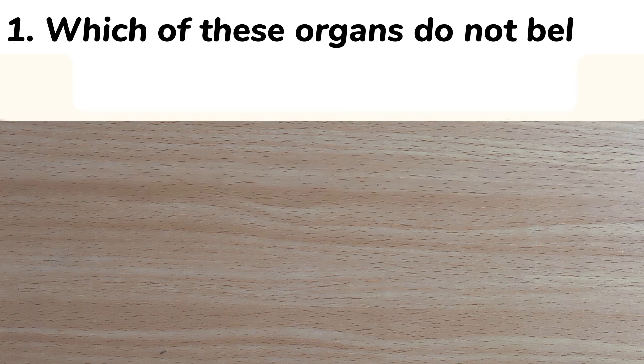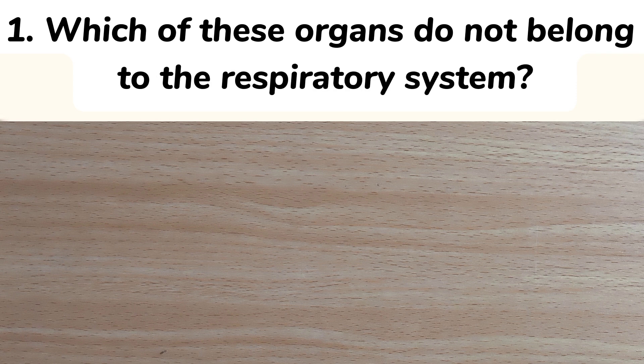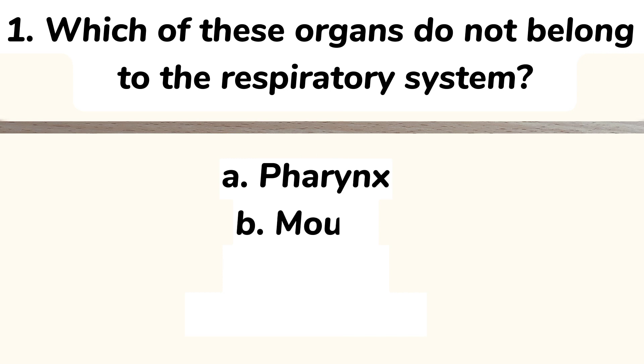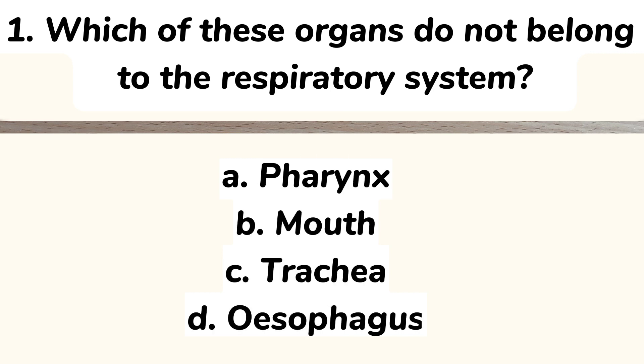Number 1. Which of these organs does not belong to the respiratory system? A. Pharynx. B. Mouth. C. Trachea. D. Oesophagus. Answer: D. Oesophagus.